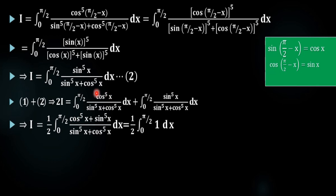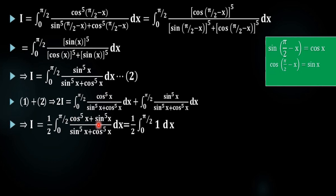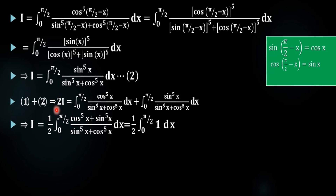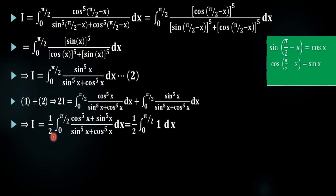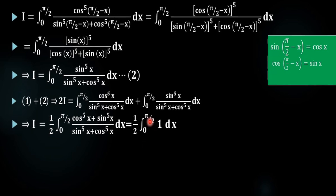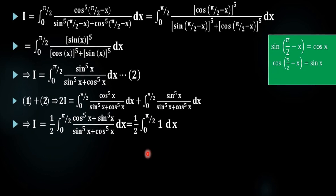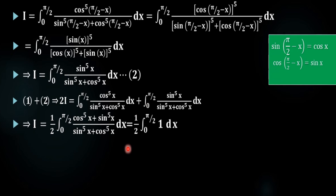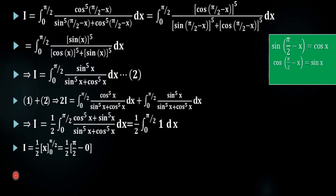The numerator becomes cos⁵x plus sin⁵x. This equals the denominator, so they cancel each other and we get 1. Therefore 2i equals the integral from 0 to π/2 of 1 dx, which gives i equal to one half times x evaluated from 0 to π/2, since the integral of 1 is x.